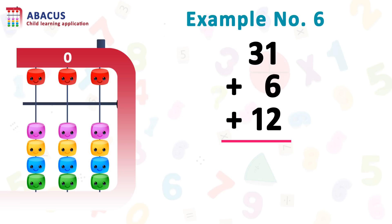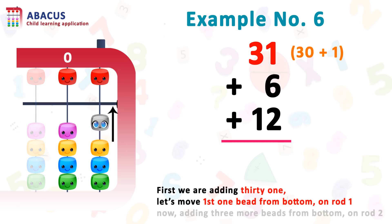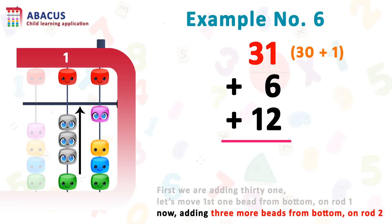So for 31, first we have to add 1 on rod 1 and add 30 on rod 2. So for 1, we are moving 1 bead from bottom to top on rod 1. Now for 30, move 3 beads from bottom to top on rod 2.